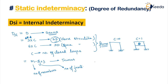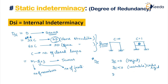For trusses specifically, if the internal indeterminacy equals zero it is a perfect truss. If it is less than zero, the truss is unstable or under-rigid. If it is greater than zero, the truss is over-rigid, also called a redundant truss.